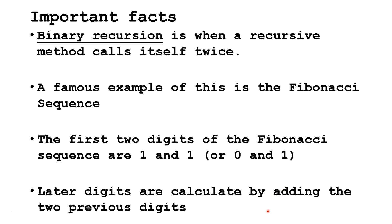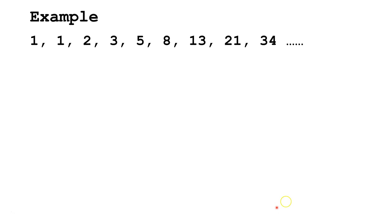Later digits are calculated by adding the two previous digits. Let's take a look at the Fibonacci sequence. So we start out with 1 and 1, and our third digit is the sum of the two previous digits, so 1 plus 1 equals 2, then 1 plus 2 equals 3, 2 plus 3 equals 5, 3 plus 5 equals 8, and so on.